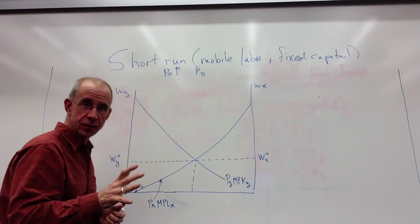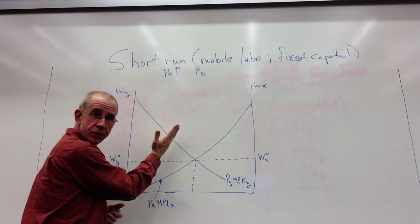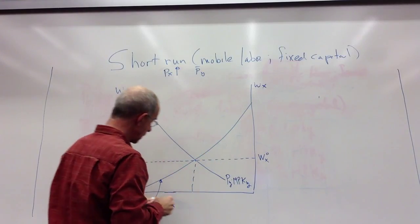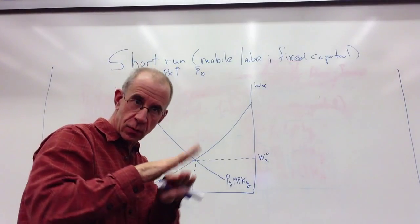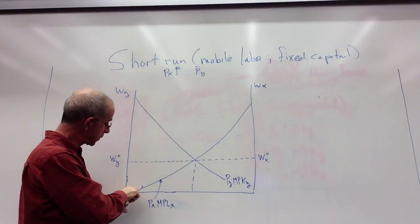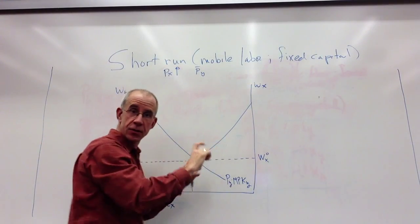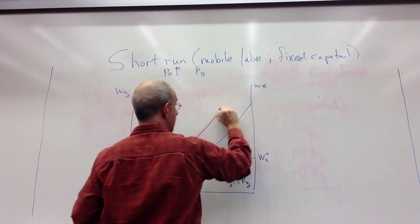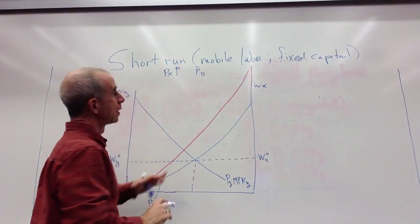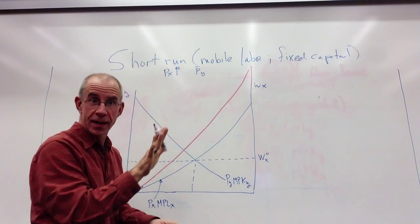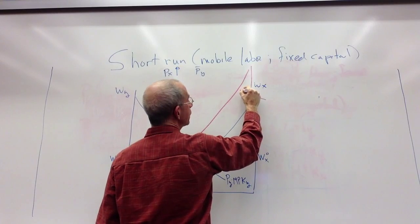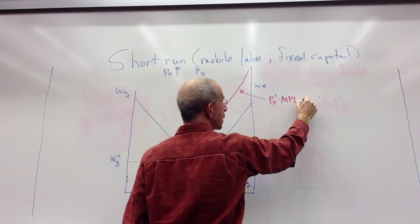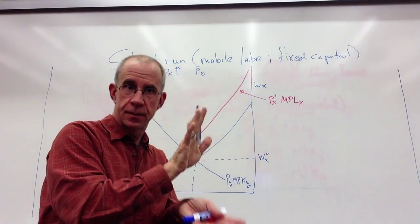So if the price of X goes up, then what we're going to have is a proportional shift up of the demand curve for labor, which is this value of marginal product of labor curve. So it's proportional. That's actually really important. If the price rise of X is 10%, it's going to be 10% here, it's going to be 10% here. So the shift is not parallel, it's proportional. The demand curve for labor is going to rotate up, if you will. And this is going to be the new price of X times various marginal productivities of labor of X. And so that shifts up proportionally.